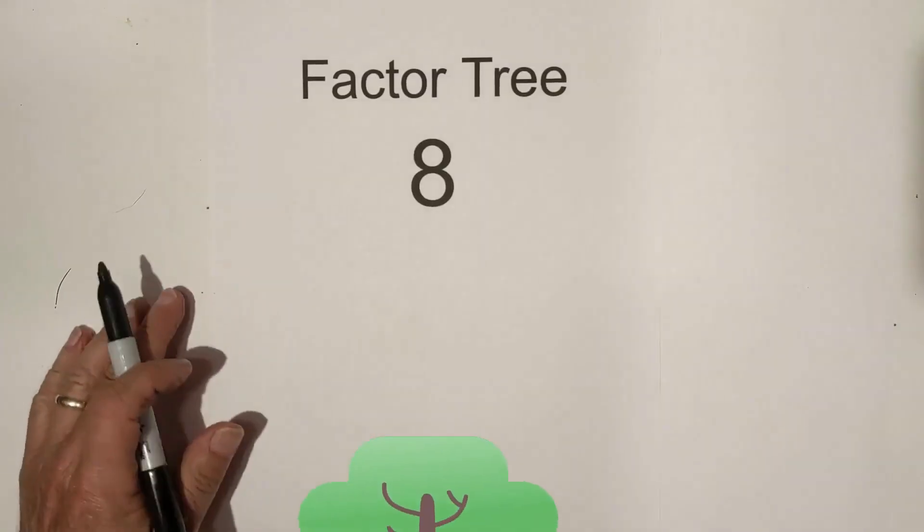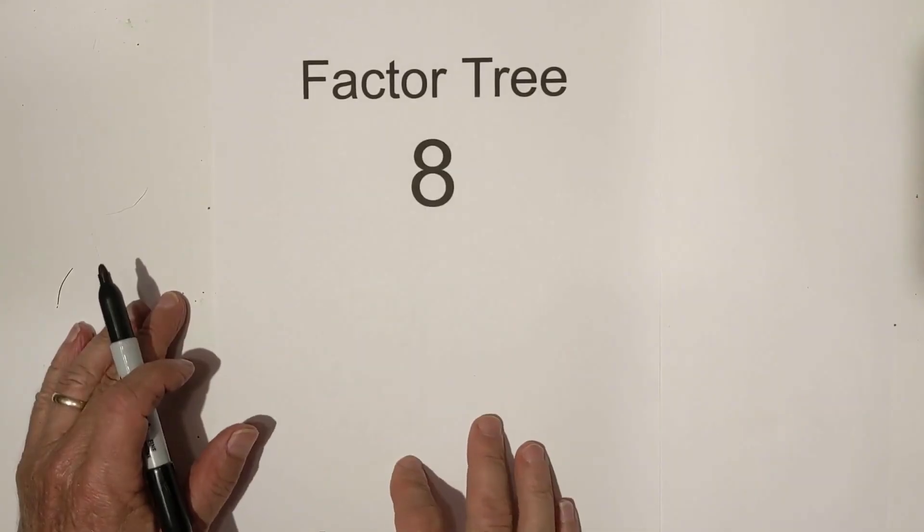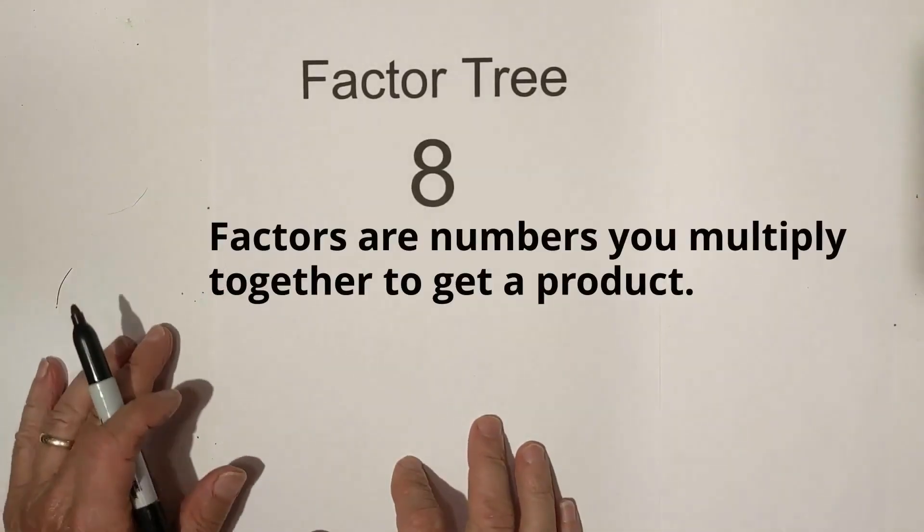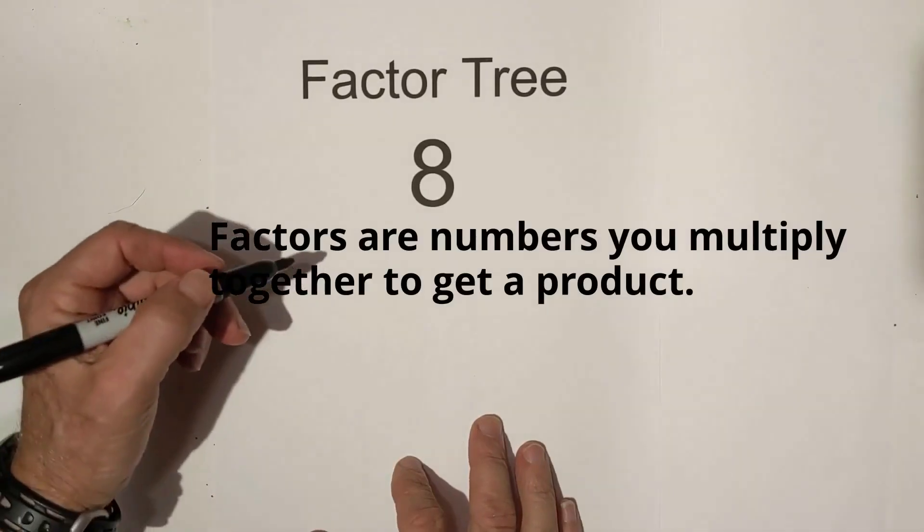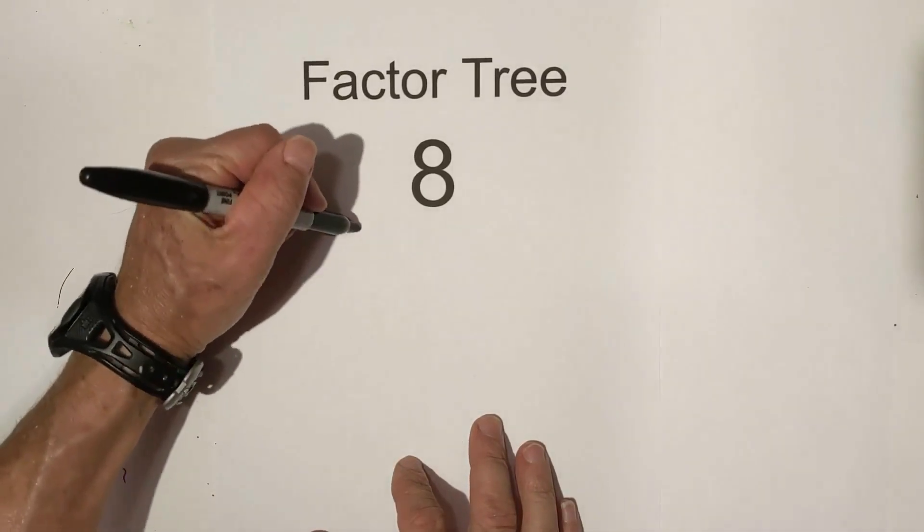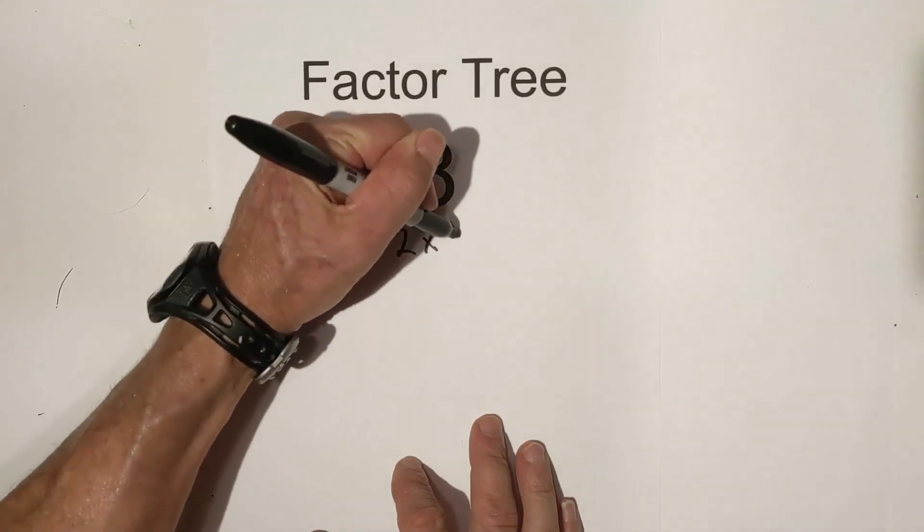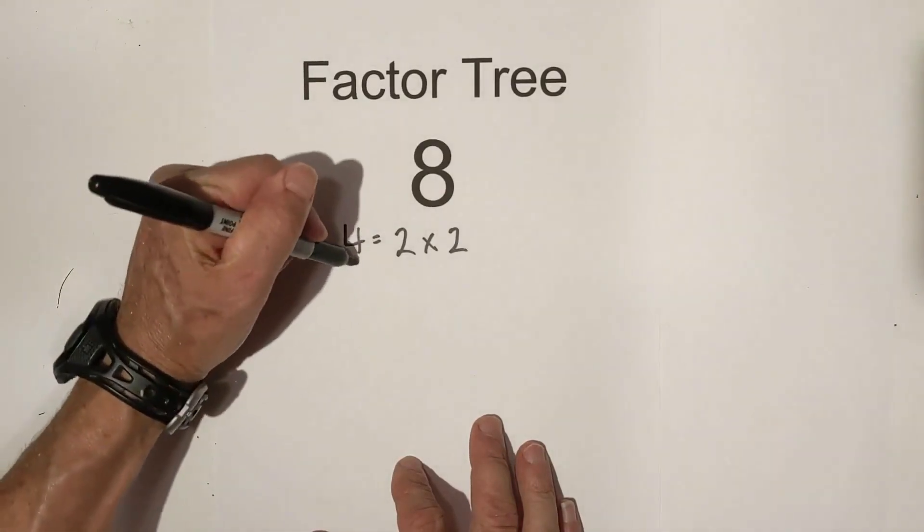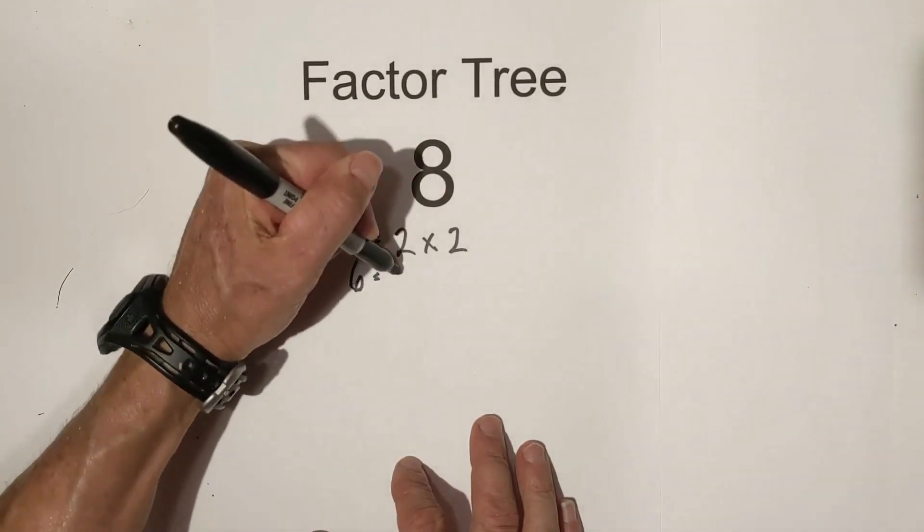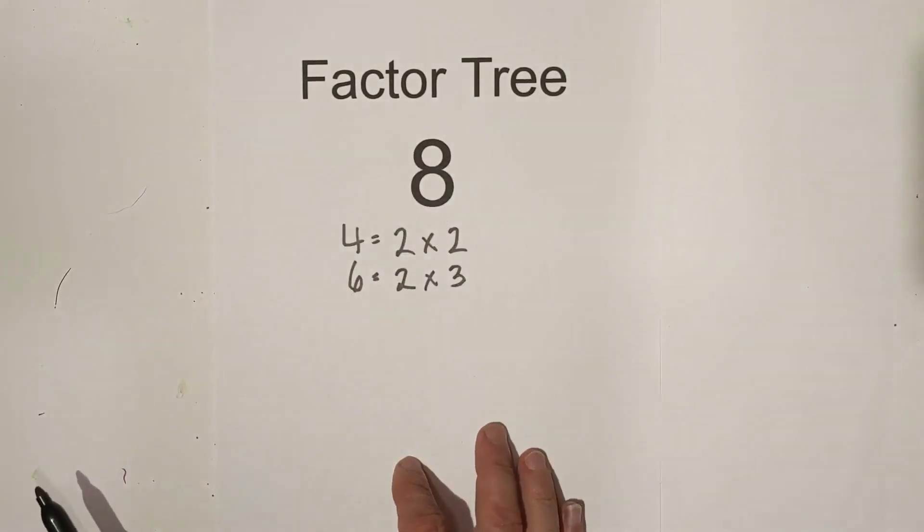Let's get started with factor trees and I'll go over some tips and tricks. Let's begin with what are factors. Factors are numbers you multiply together in order to get a product. For example, if you have four, then two times two equals four. Or say we have six, then the factors are two times three.